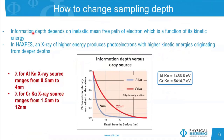Since the inelastic mean free path depends on kinetic energy, there are several ways to change kinetic energy. One way is to change the X-ray source energy. For an aluminum K-alpha source versus a chromium K-alpha source, increasing the primary source energy by three times increases the sampling depth for silicon 2p approximately three times as well. For aluminum K-alpha, lambda ranges from 0.5 to 4 nanometers, while for chromium it is three times higher: between 1.5 and 12 nanometers.